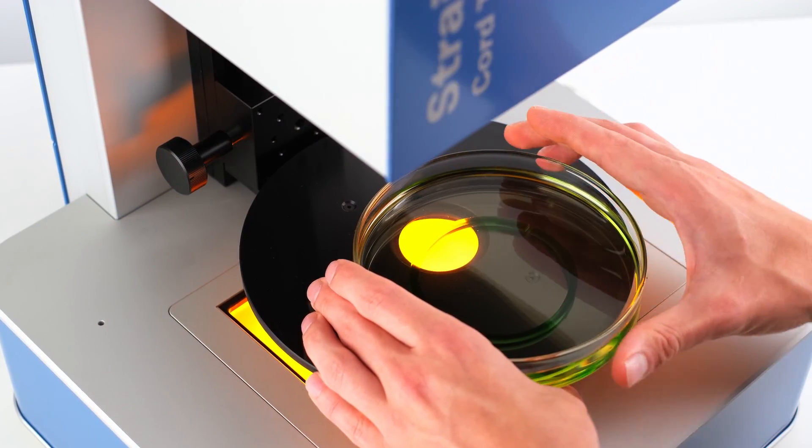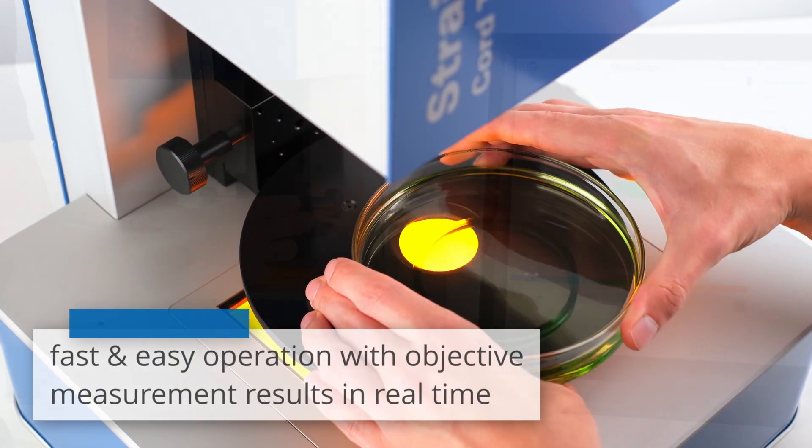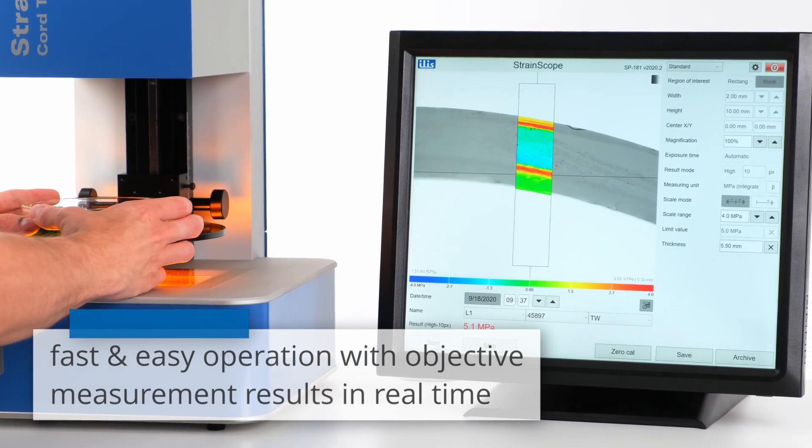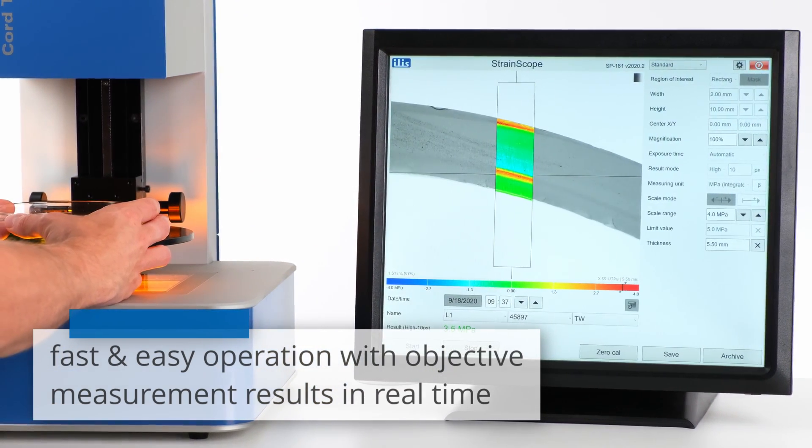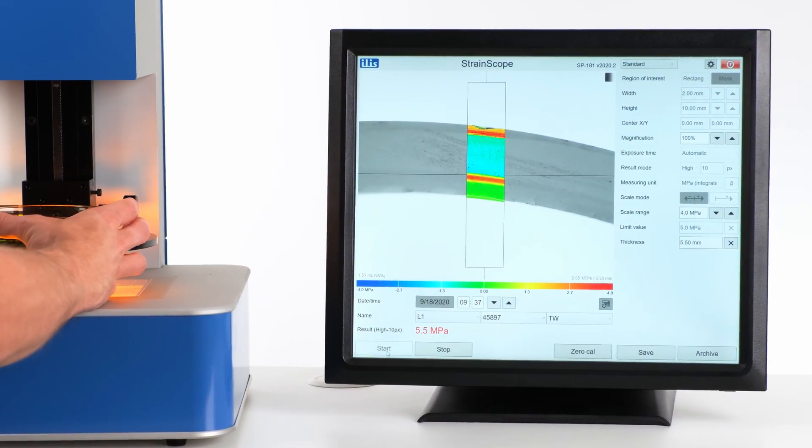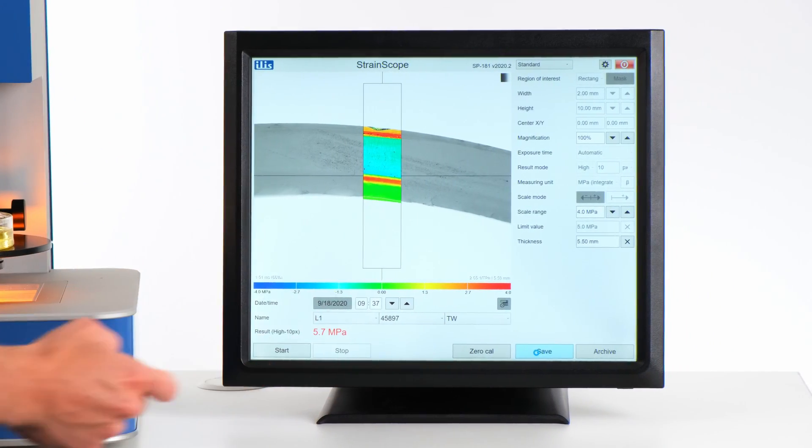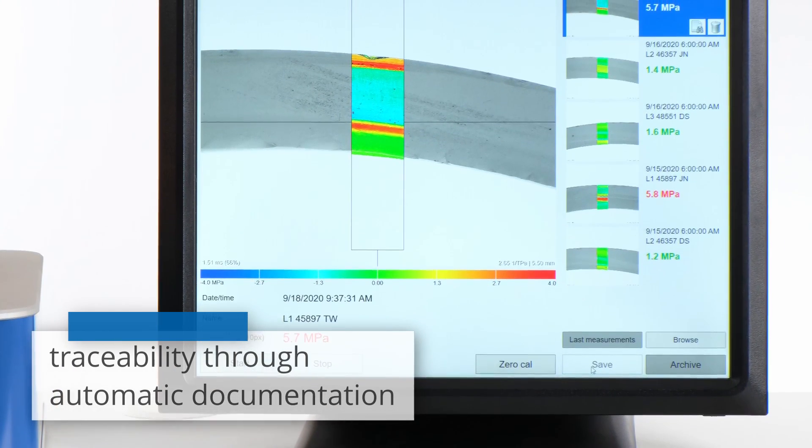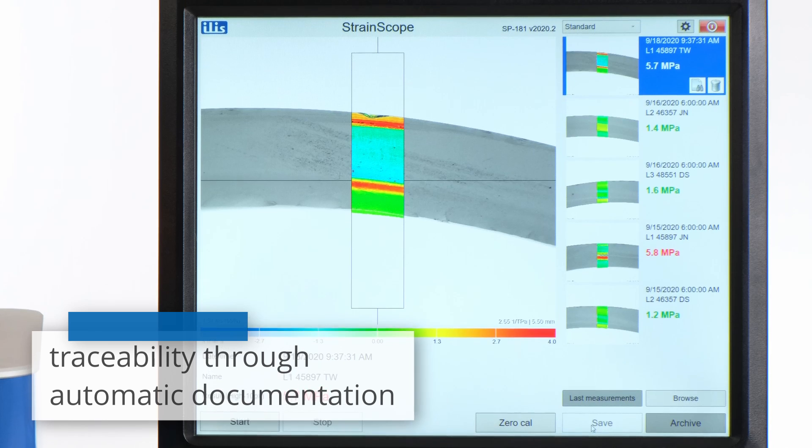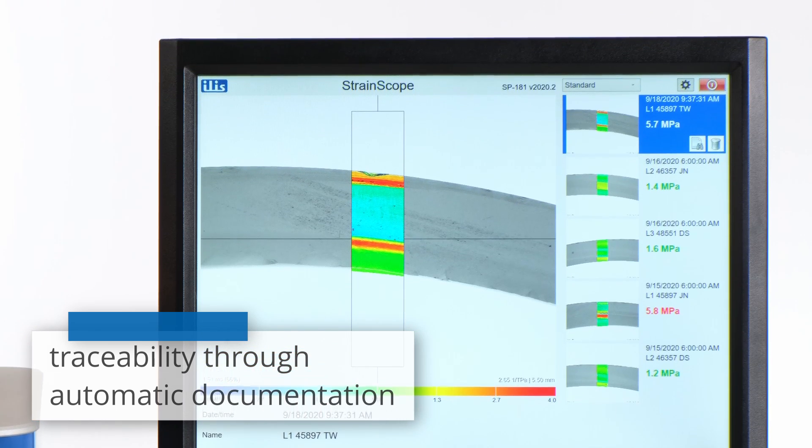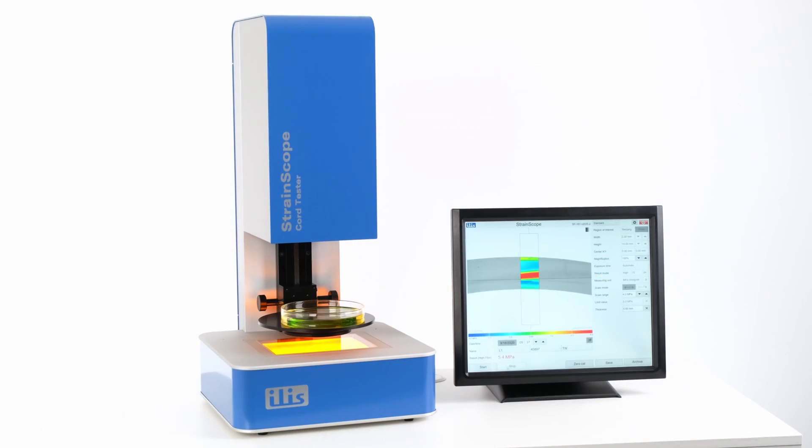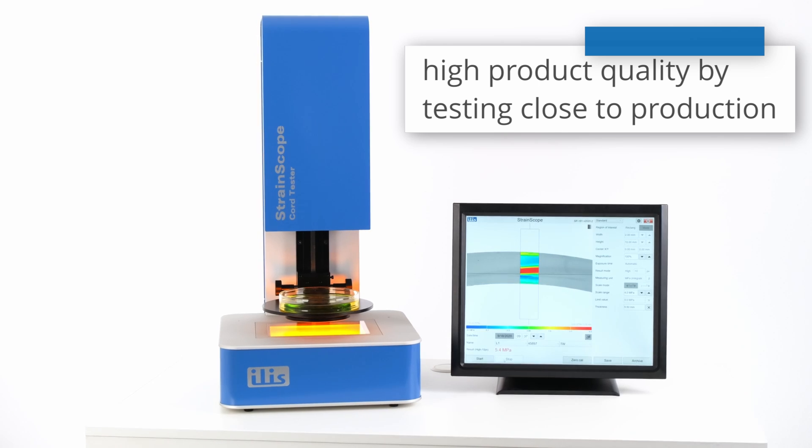Operation is quick and easy. The objective measurement results are displayed in real-time on the computer screen. Measurements can be saved in the integrated archive, ensuring complete documentation and traceability of all results for consistently high product quality.